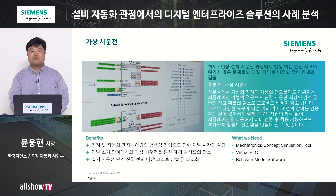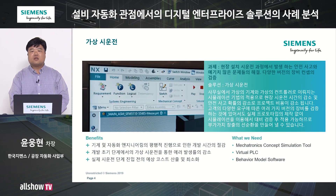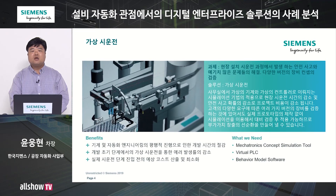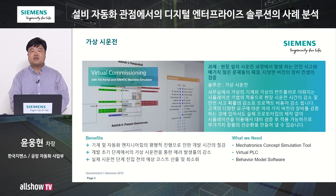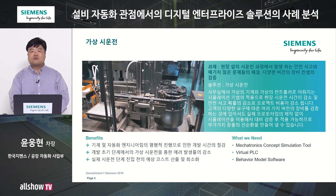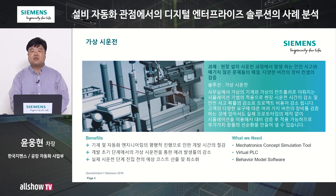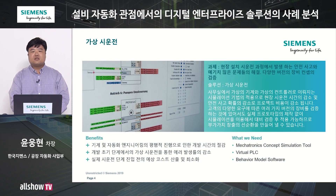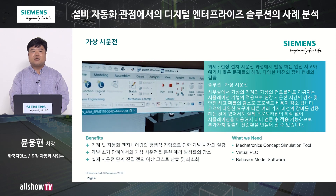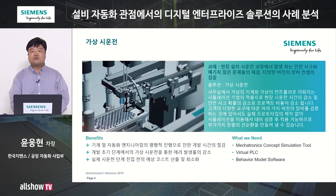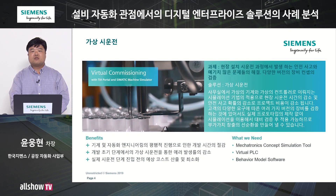예를 들어 예상하지 못한 기구의 충돌이나 안전상의 문제로 인명의 손상이나 비용의 손실을 겪기도 하고, 고객의 요청에 따라 초기와는 다른 형태의 설계를 검증해가며 프로젝트를 진행하는 경우도 시운전 단계에서 있을 수 있습니다. 이러한 것들이 잠재적인 위험 요소와 추가 비용으로 돌아오게 됩니다. 가상 시운전은 가상의 PLC와 가상의 장비를 만들어서 가상 현실에서 시운전을 해보고 현장 시운전을 가기 전에 발생할 수 있는 모든 예상 가능한 사고 요소를 최소화하자는 것이 핵심입니다. 현장에서의 설치 시간과 안전 사고 요소를 가상 시운전 과정에서 줄일 수 있기 때문에 프로젝트 전체의 기간을 줄여서 비용의 감소를 이뤄낼 수 있습니다.